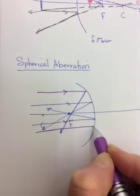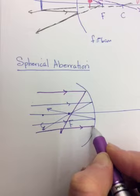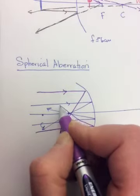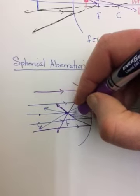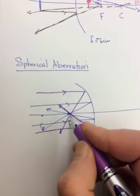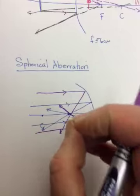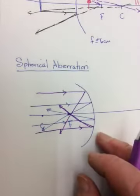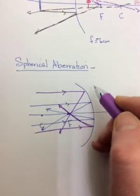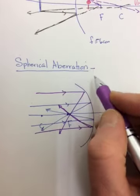So the ones that are hitting the outer ridges kind of miss F. And the result is that you don't get a clear image, because they're not all concentrated perfectly at one point. You get a blurry image.